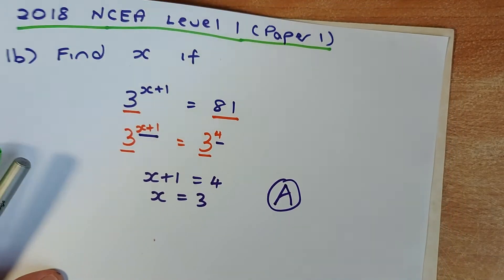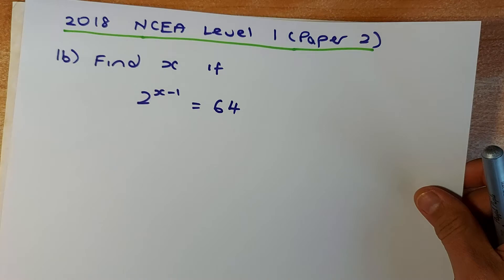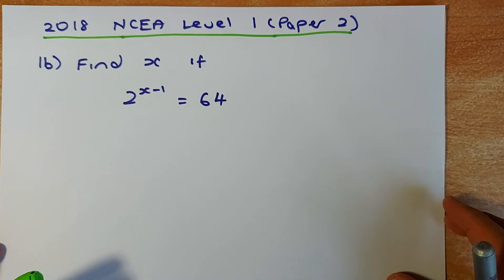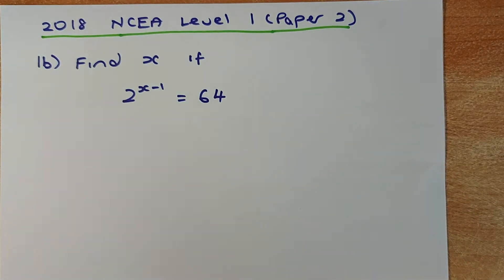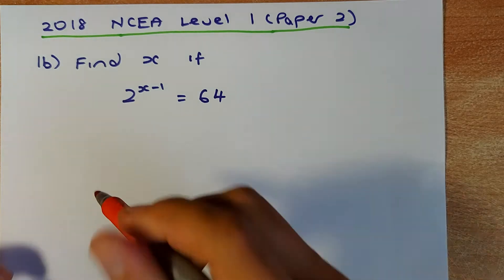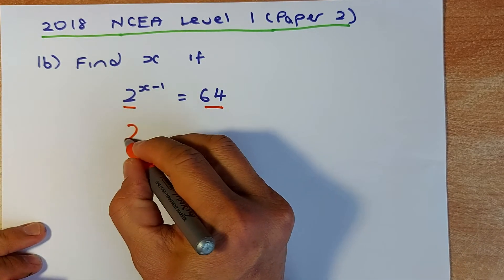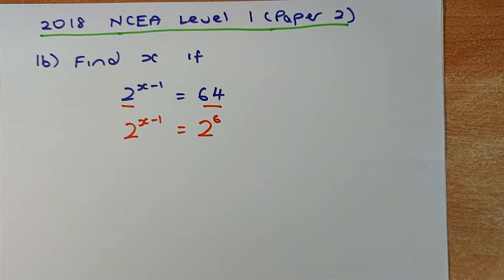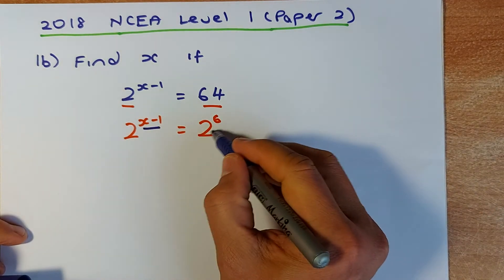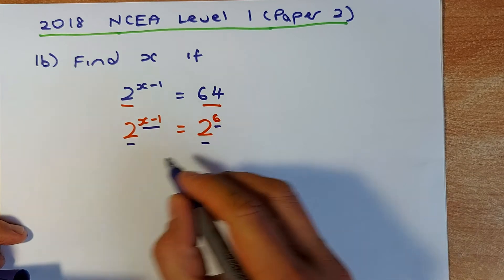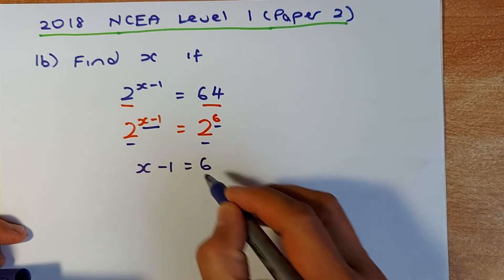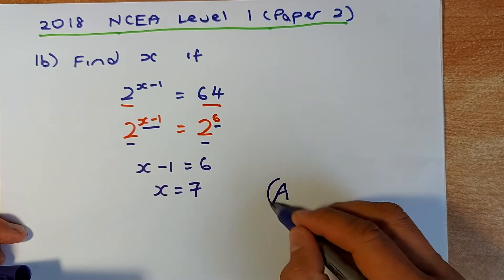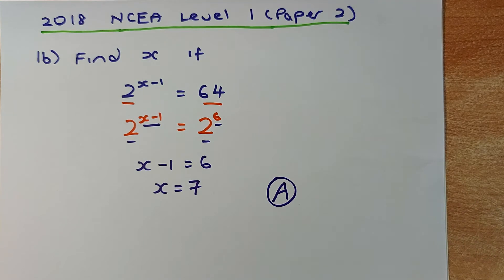The next example is also from 2018 NCEA Level 1, paper 2, and is very similar. You solve 2 to the power of (2X minus 1) equals 64. Again, make the base the same — 64 is 2 to the power of 6. With the same base, 2X minus 1 equals 6. Solving algebraically, X equals 6 plus 1, which gives X equals 7. That is again an easy achieve in NCEA Level 1.